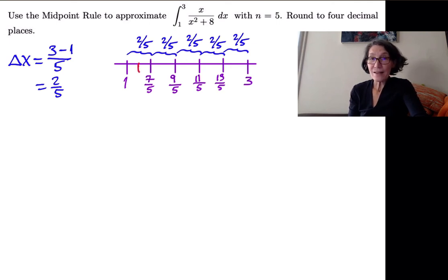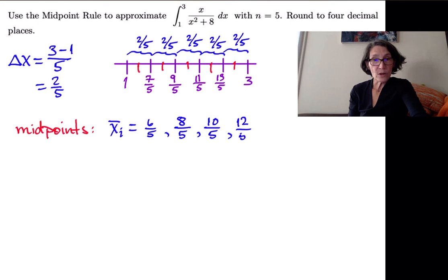So we need the midpoints now, because that's what we're actually going to use to plug in and get the height of each rectangle. So the midpoints are written, we write xi bar for the i-th midpoint. And so, as we can see, the first one is going to be six-fifths. The second one is halfway between seven-fifths and nine-fifths, so that's eight-fifths. The third one is ten-fifths. The fourth one is twelve-fifths. The last one is fourteen-fifths. So now we have our five midpoints.